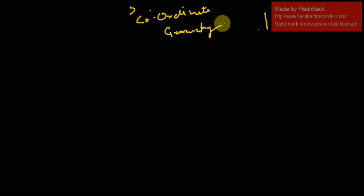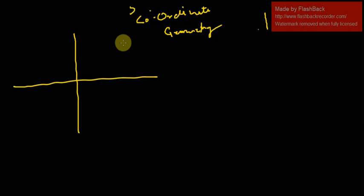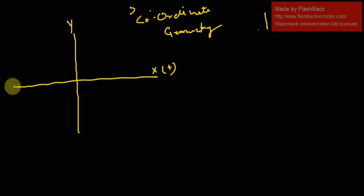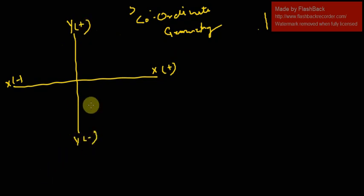Hello friends, now we are starting our new chapter — coordinate geometry. In this chapter we will study about coordinates. We know about the x-axis and y-axis: the x-axis is a horizontal line and the y-axis is a vertical line. The right side of the x-axis is positive and the left side is negative; the upside of the y-axis is positive and the downside is negative. So if we have to locate any point, we will write both coordinates x and y.